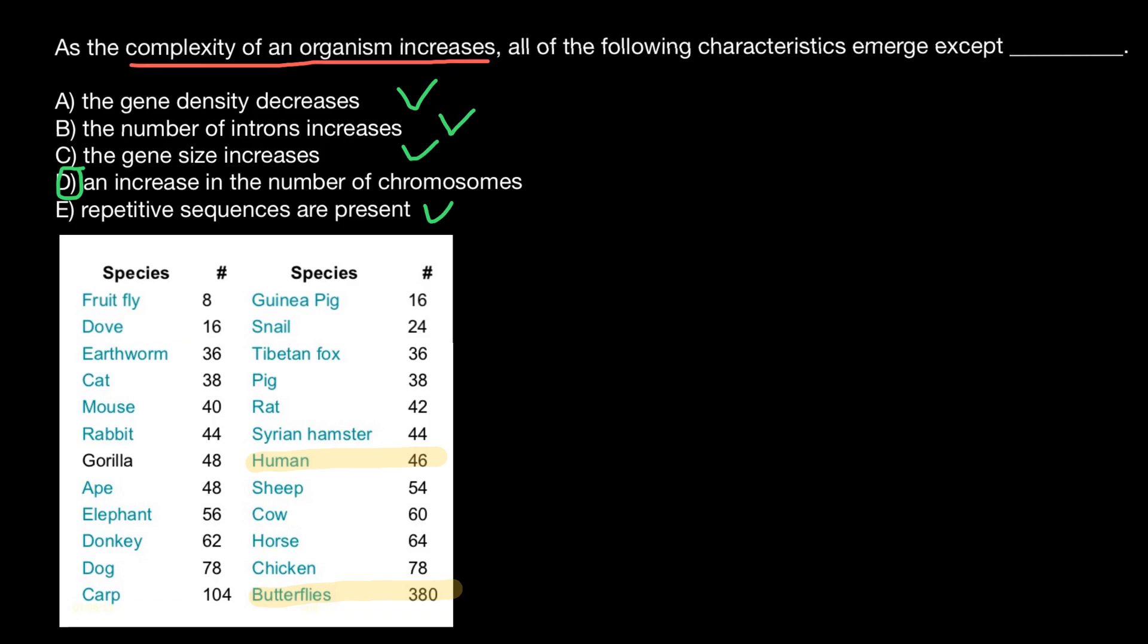Many plants also have a number of chromosomes that exceed the number in humans. For example, earthworms have 36 chromosomes, mice have 40, and cats have 38 - very close to humans. Chickens have almost twice as many chromosomes as humans, and carp fish have more than twice as many.